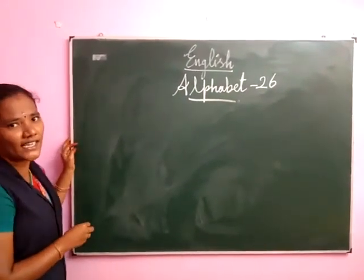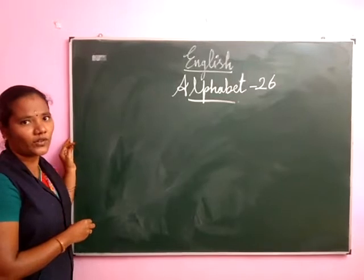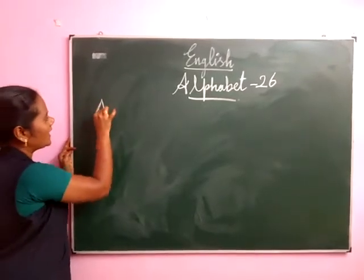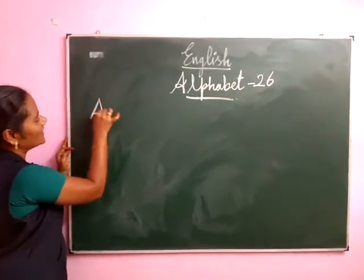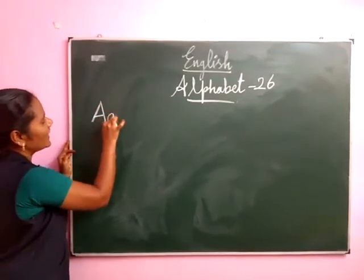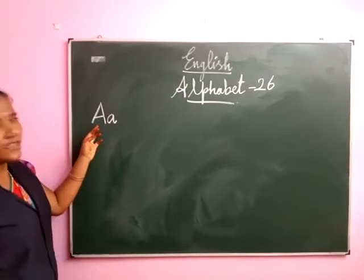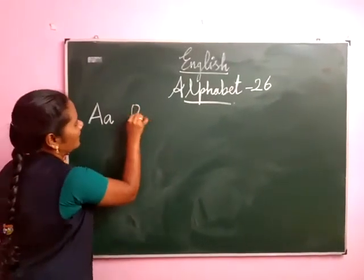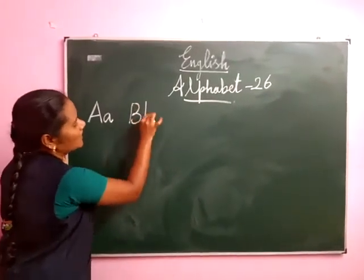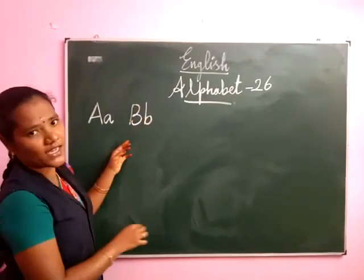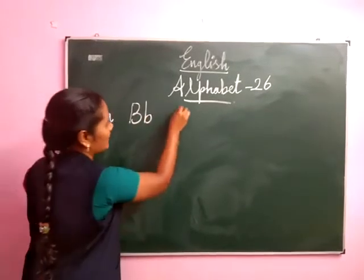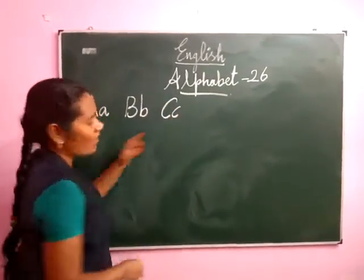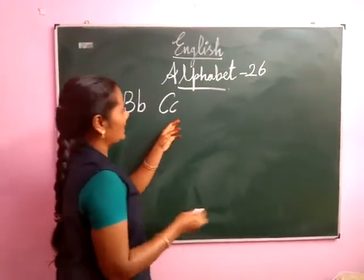Now, what is the first letter? Any idea? Okay, capital A. What is the first letter? Capital A, small a. Very good. Next, capital B, small b. Next, capital C, small c. Very good.